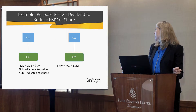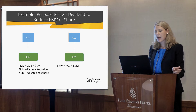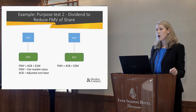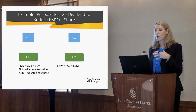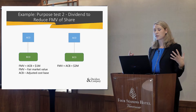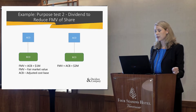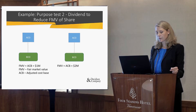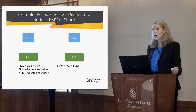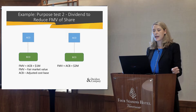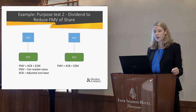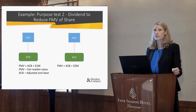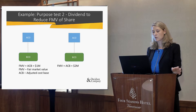Let's look at an example of how we fall into purpose test number two — a dividend to reduce the fair market value of a share. In this scenario, Company A owns all of the shares of Company B, and the adjusted cost base and the fair market value of those shares is $1 million.